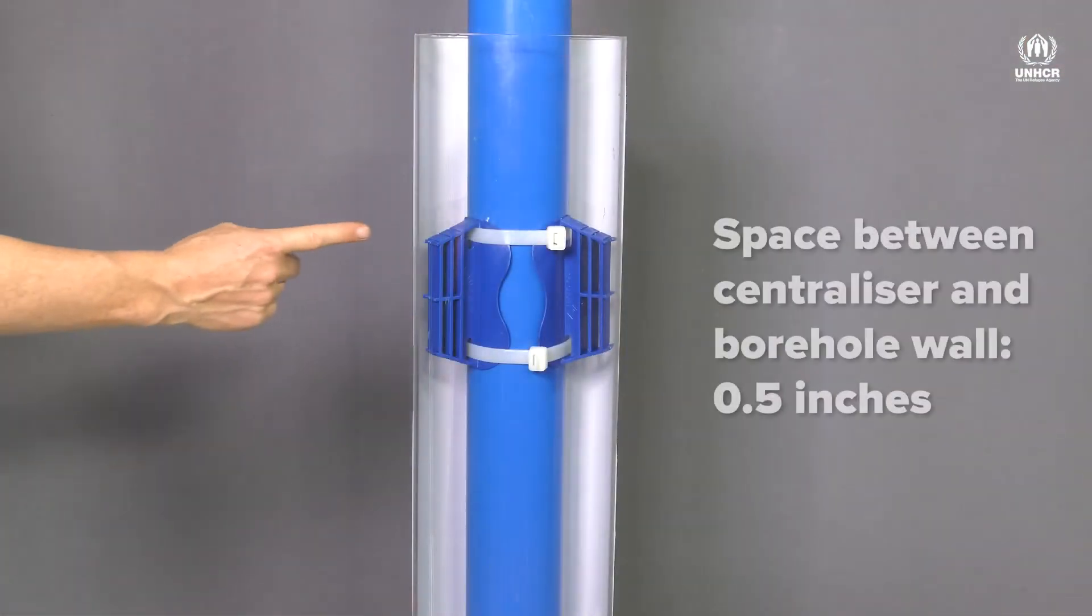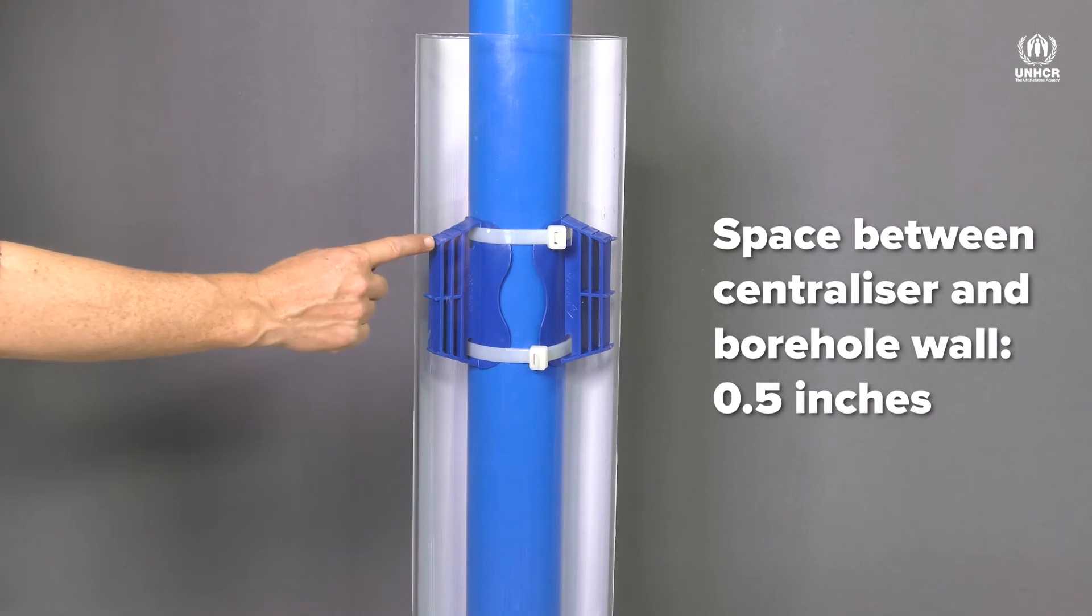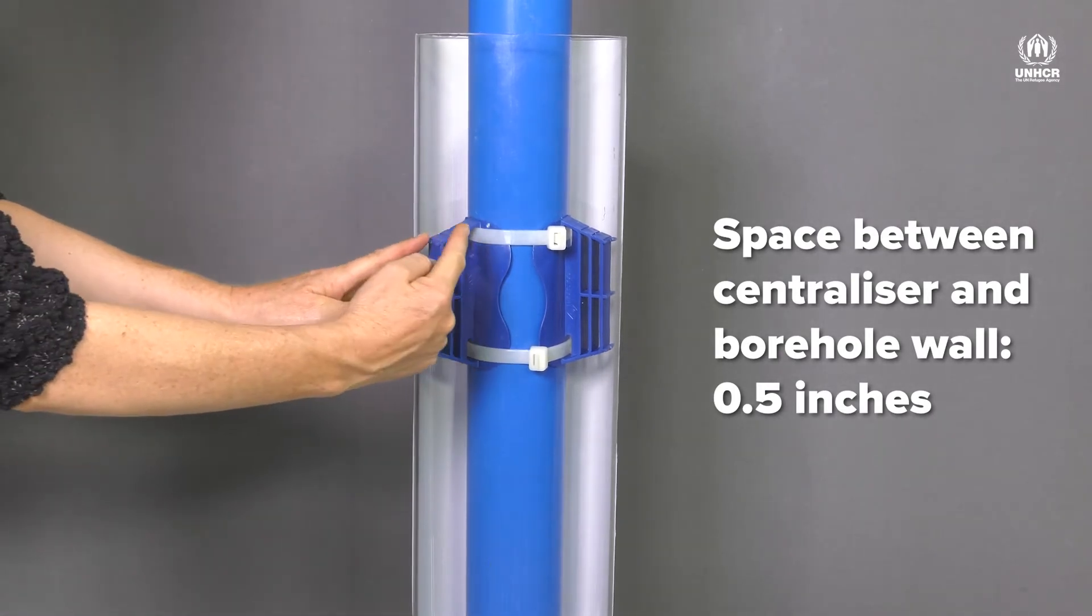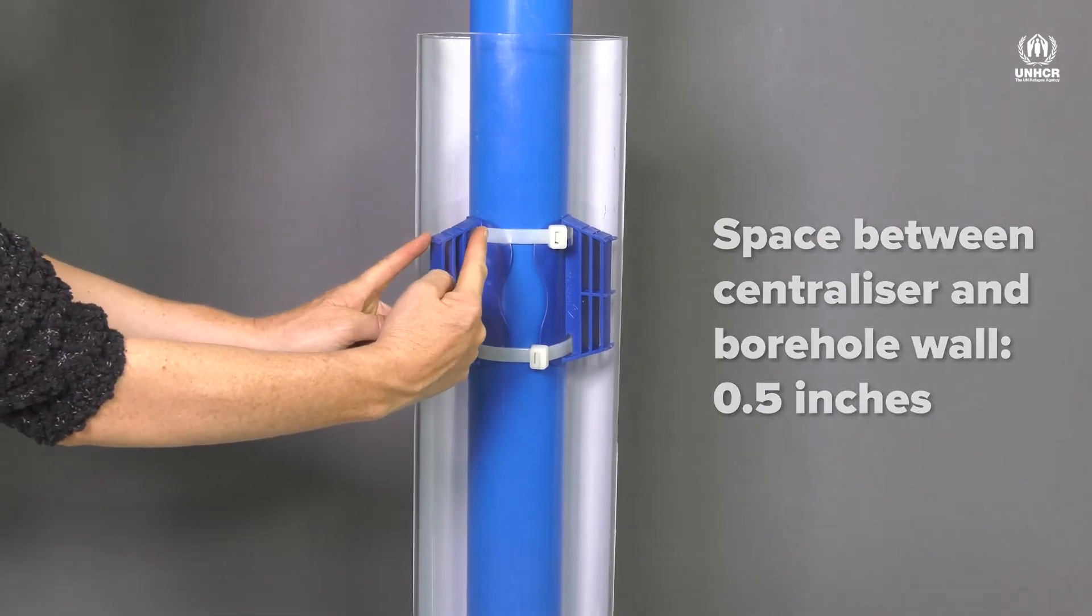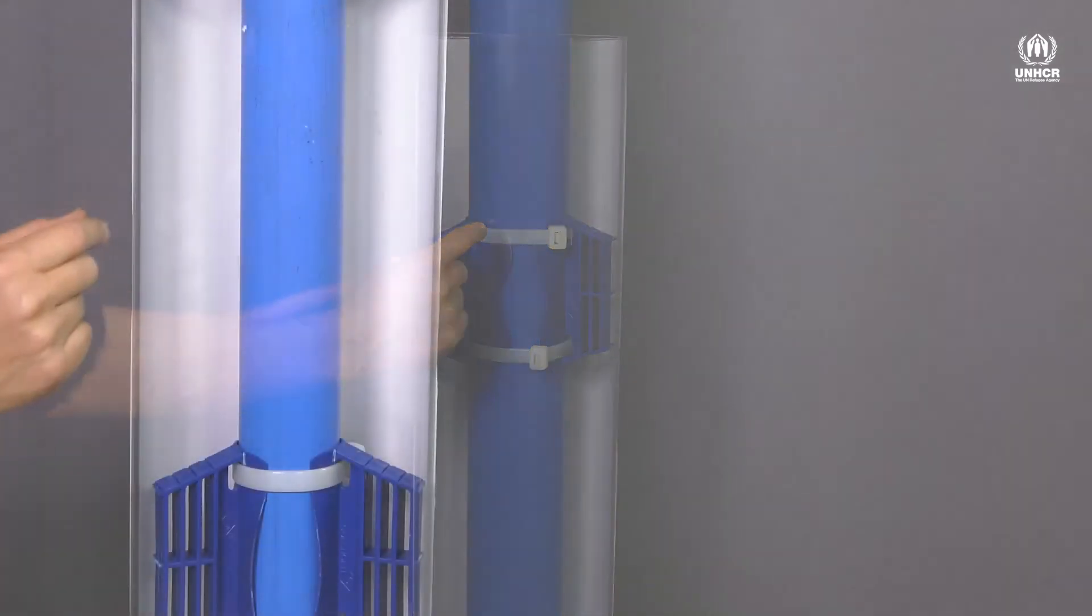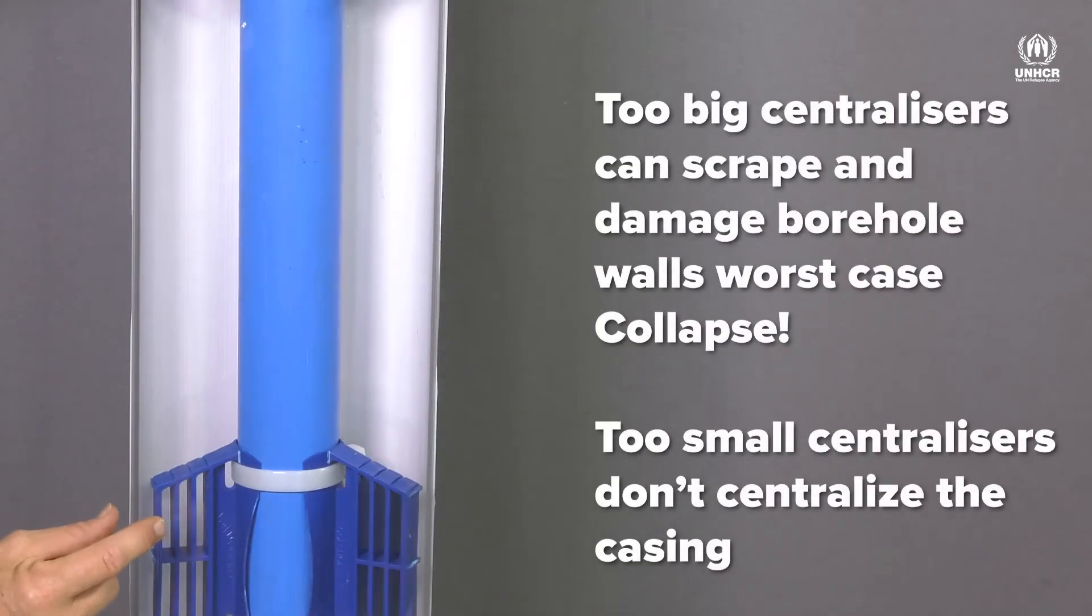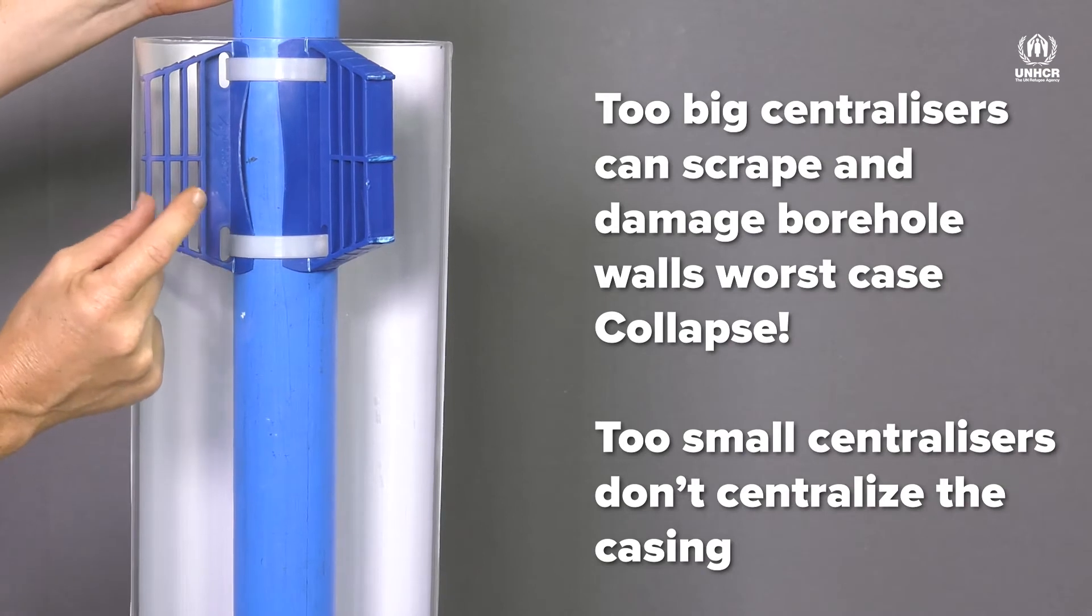Centralisers should be just smaller than the available space by approximately half an inch. If the centralisers are too big, they can get stuck during installation and can also scrape against the borehole walls, causing collapse and damage to the borehole.